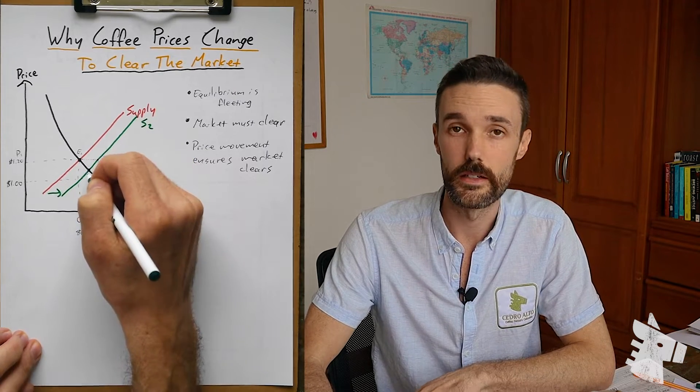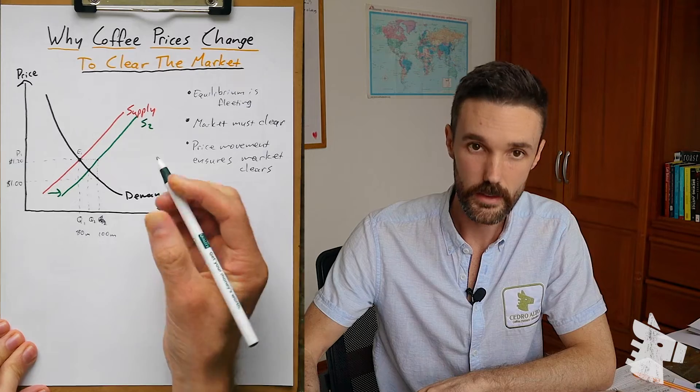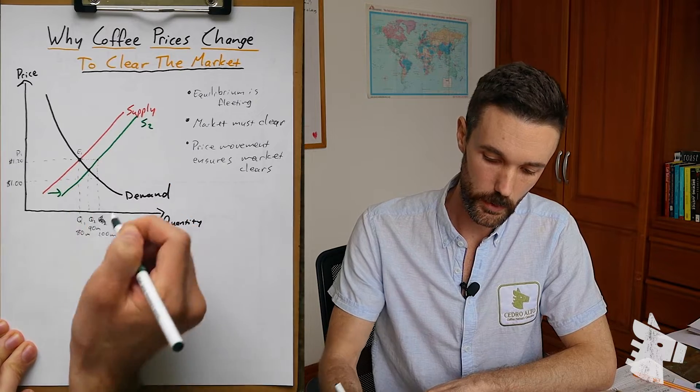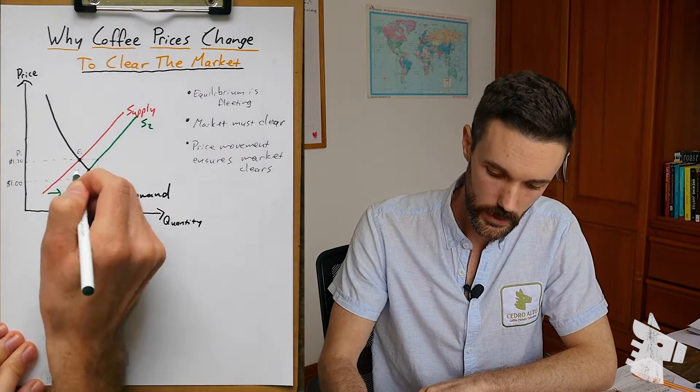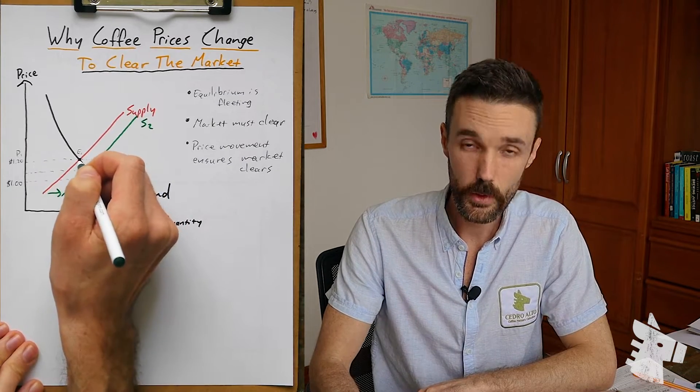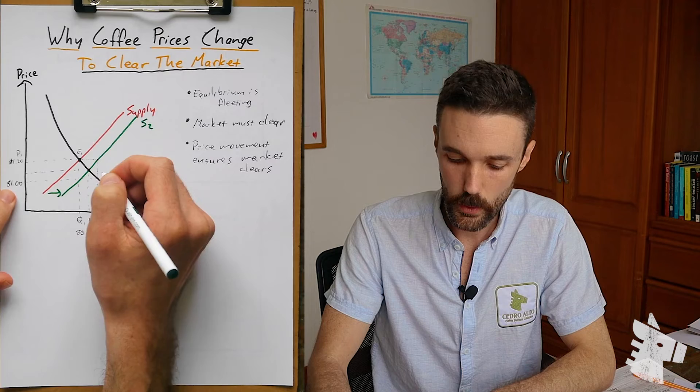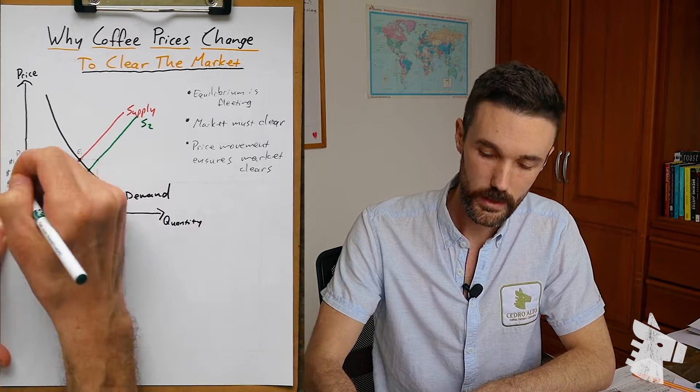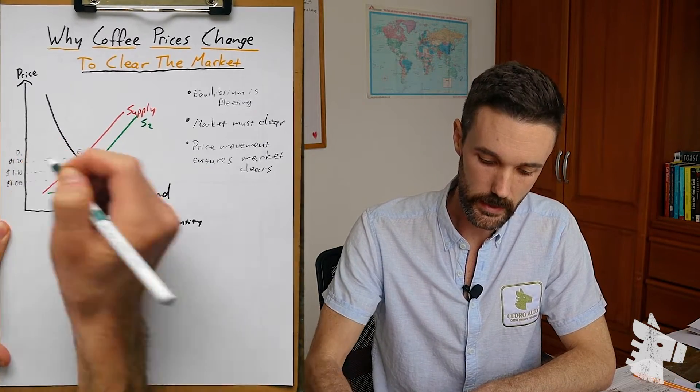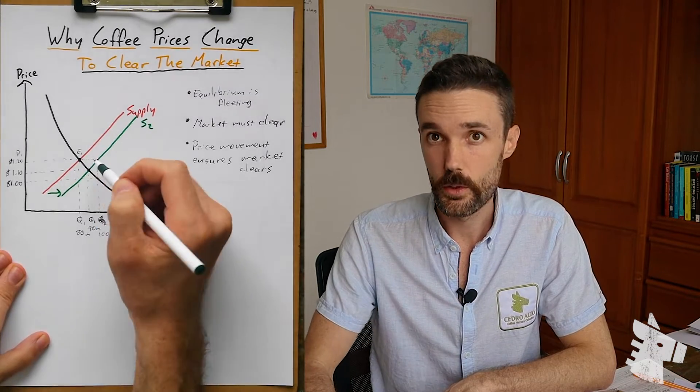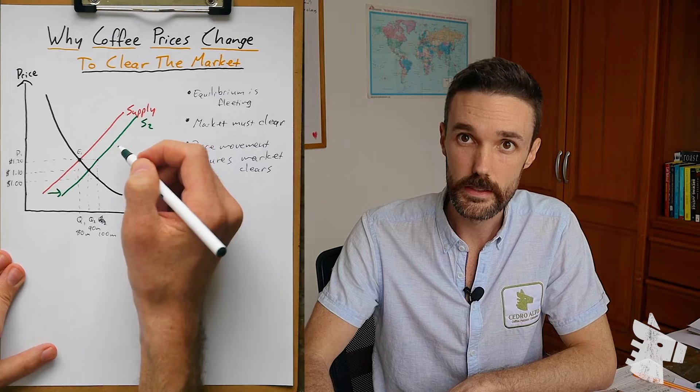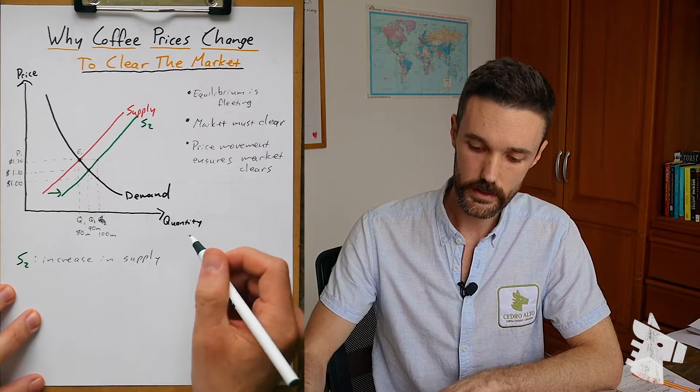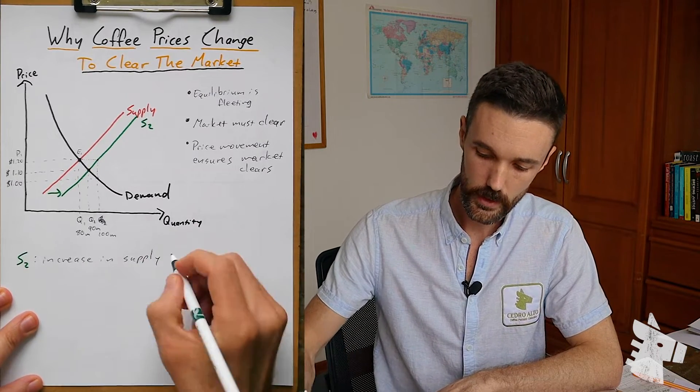In this case right here, where supply curve meets the demand curve, just as before. Let's say this is about 90 million bags. And let's call this Q2, because this is the second equilibrium point here for our second supply curve. And that's inevitably going to be a lower price than before, because quantity is higher. But it's not going to be quite as low as $1, because the quantity isn't quite as high as what the suppliers had proposed. Let's say it ends up at about $1.10. So this is our new equilibrium point.